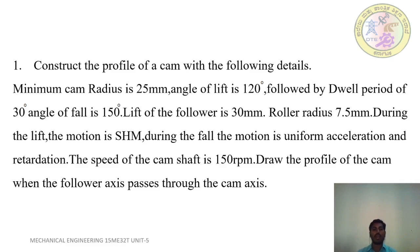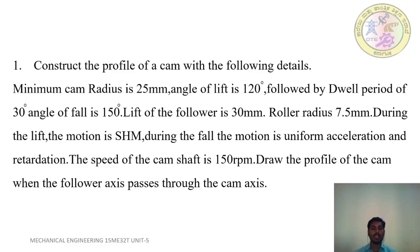First problem: Construct the profile of a CAM with the following details. Minimum CAM Radius is 25 mm. Angle of Lift is 120 degrees, followed by a Dwell Period of 30 degrees. Angle of Fall is 150 degrees. Lift of the follower is 30 mm. Roller radius 7.5 mm. During the lift, the motion is Simple Harmonic Motion. During the fall, the motion is Uniform Acceleration and Retardation. The speed of the CAM shaft is 150 rpm. Draw the profile of the CAM when the follower axis passes through the CAM axis.